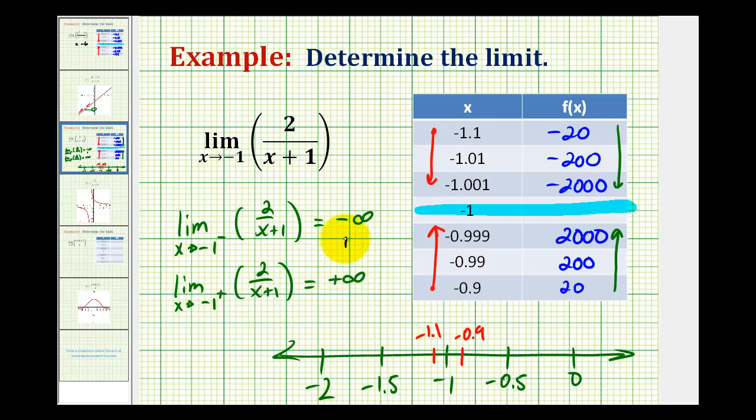Well, neither of these limits exist. So, obviously, the limit as x approaches negative 1 does not exist. So, this is how we can determine a limit numerically by using a table of values.